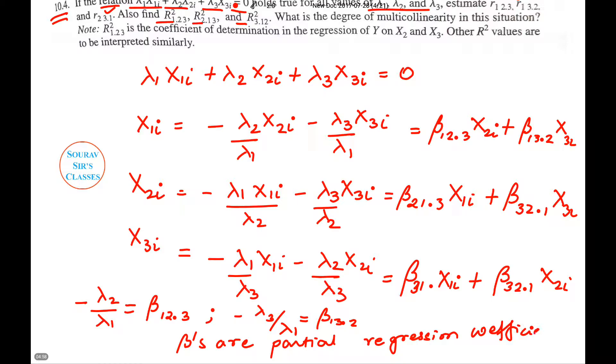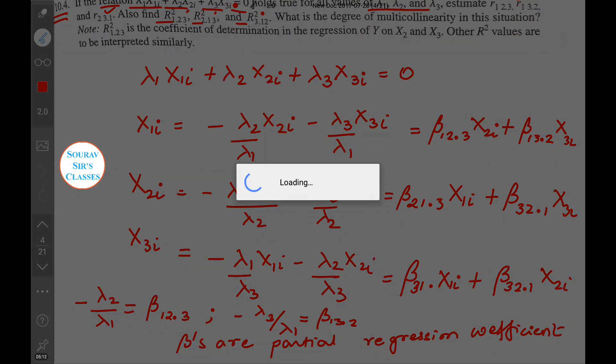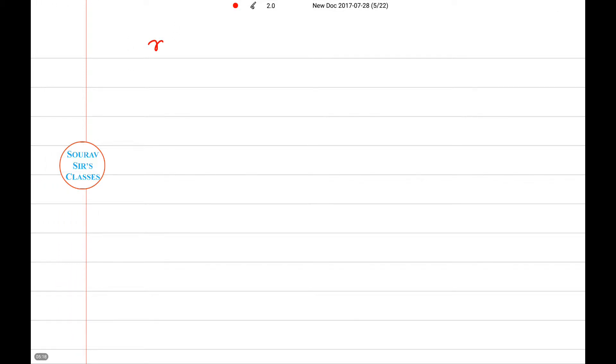Now, having said that, let us quickly derive the value of r-squared, all the r-squares as well as the r. Now first we need to derive the partial correlation coefficient between Y and X₂ holding X₃ constant, which is given by this.